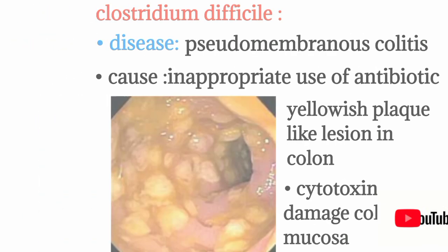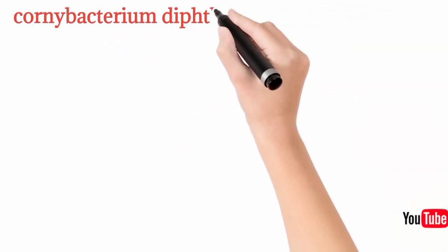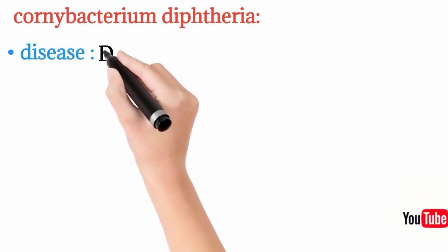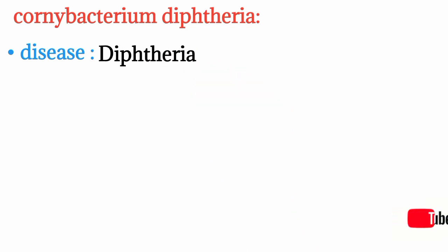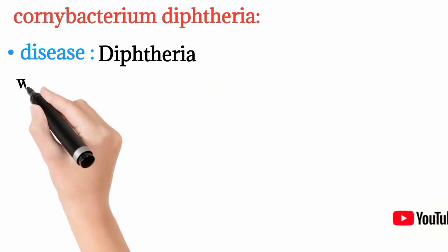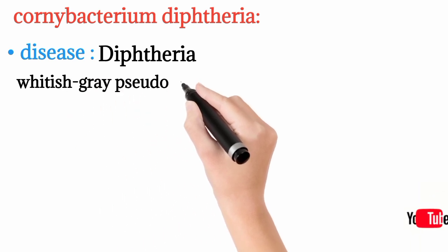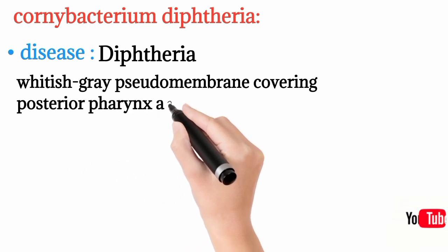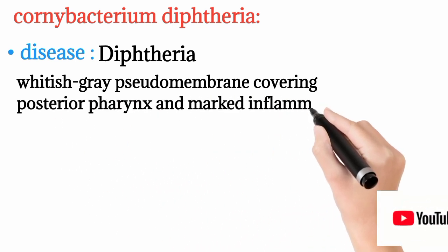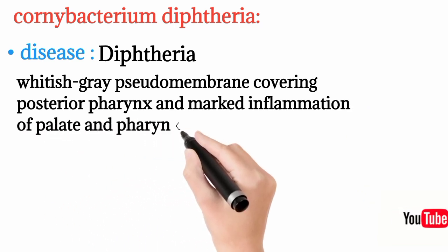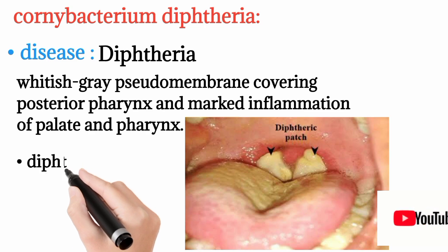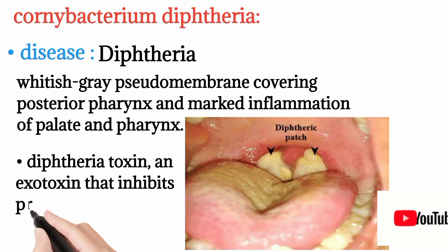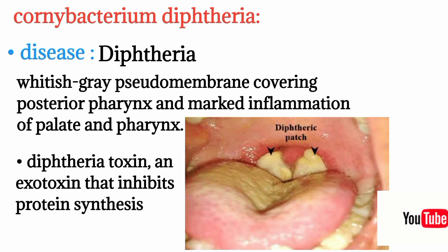Corynebacterium diphtheriae causes diphtheria, characterized by a grayish-white pseudomembrane covering the posterior pharynx and palate region. A figure shows the pseudomembrane covering the posterior pharynx. The mechanism of action is through diphtheria toxin, which inhibits protein synthesis.